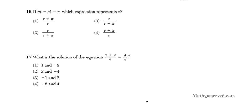It says, if rx minus st equals r, which expression represents x? This is basically solving an equation using the properties of algebra. So we have rx minus st equals r. We want to get the representation of x by getting x by itself. If we get x isolated by itself on one side of the equation, then the expression on the right would be what the value of x is.